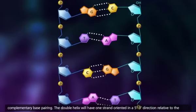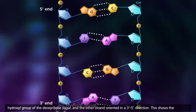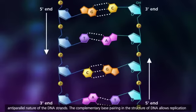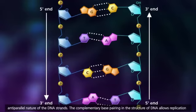The double helix will have one strand oriented in a 5' to 3' direction relative to the hydroxyl group of the deoxyribose sugar, and the other strand oriented in a 3' to 5' direction. This shows the anti-parallel nature of the DNA strands.